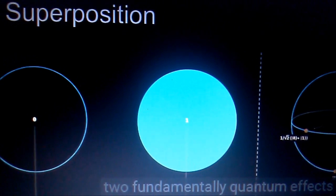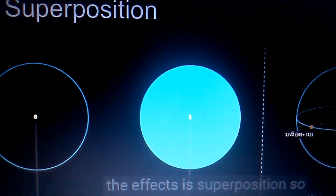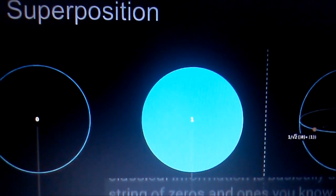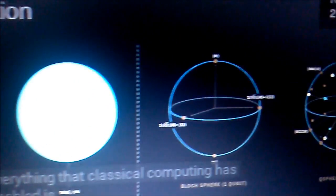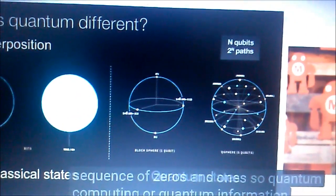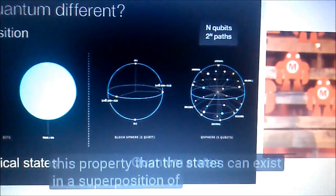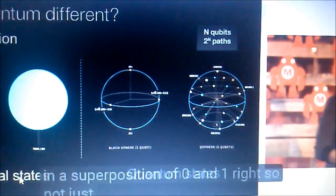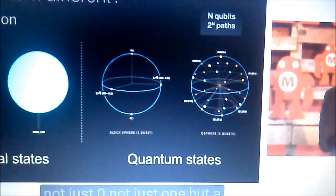One of the effects is superposition. So classical information is basically a string of zeros and ones. You know, everything that classical computing has enabled is boiled down to a sequence of zeros and ones. So quantum computing, or quantum information, has this property that the states can exist in a superposition of zero and one. Right? So not just zero, not just one, but a superposition of zero and one.